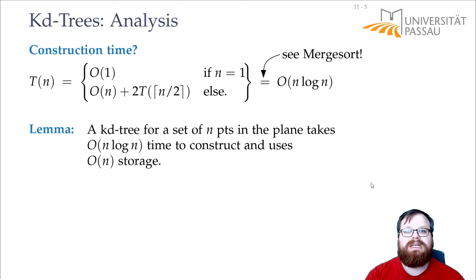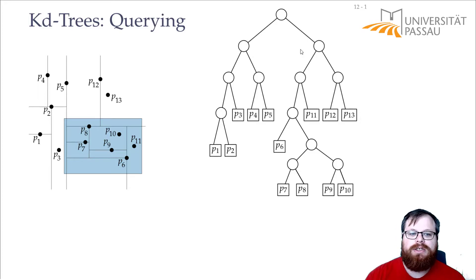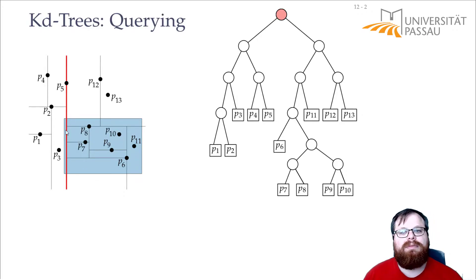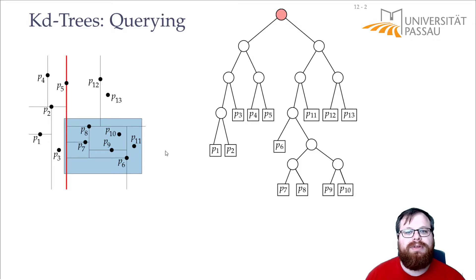It's exactly the same as in two dimensions. Let's move on to querying. Assume the blue rectangle here is our query rectangle. The first line where we split the point set is this vertical one, and it goes through the query rectangle. So we have to look on both sides to figure out what part of the query rectangle lies on the left and what lies on the right — we have to move on in both directions.